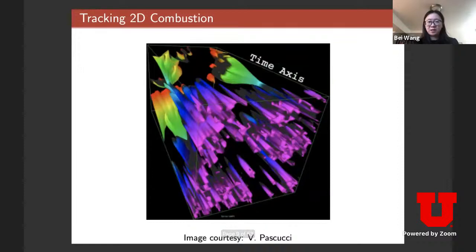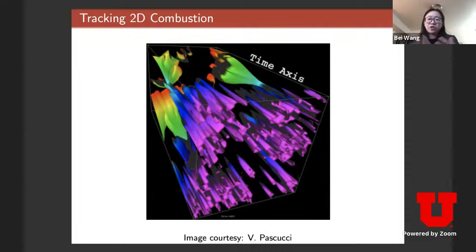For example, you can track over time how the front part of a combustion zone evolves. In scientific visualization, feature tracking using topological techniques is very prominent — there's a lot of topological work in that space.